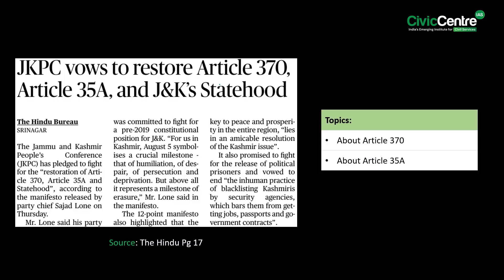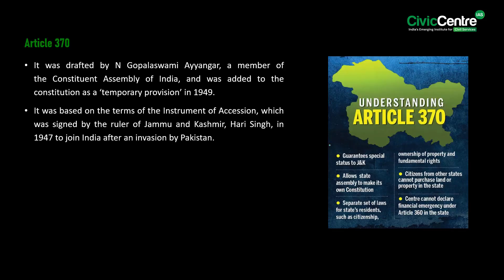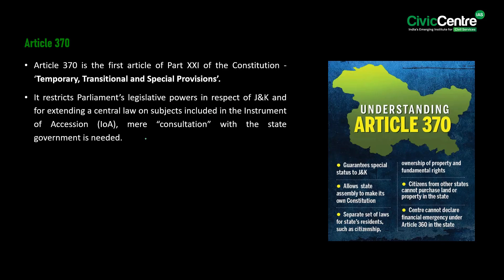The next article says that Jammu and Kashmir's People Conference has pledged to fight for the restoration of Article 370, Article 35A, and statehood, according to the manifesto released by party chief Sajad Lone. Article 370 was drafted by N. Gopalaswami Ayyangar, a member of the Constituent Assembly of India, and was added to the constitution as a temporary provision in 1949. It was based on the terms of the Instrument of Accession signed by the ruler of Jammu and Kashmir, Hari Singh, in 1947, to join India after an invasion by Pakistan. Article 370 is the first article of Part 21 of the constitution, which deals with temporary, transitional, and special provisions.